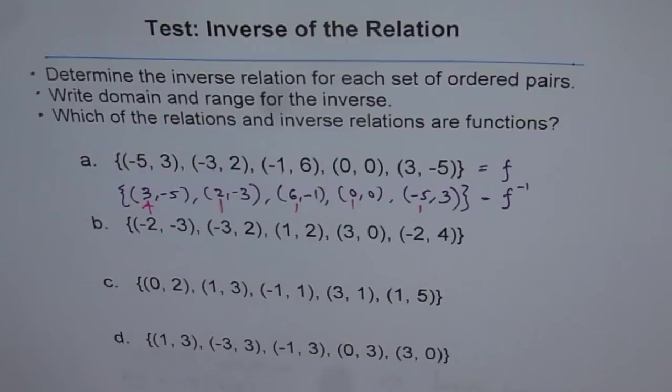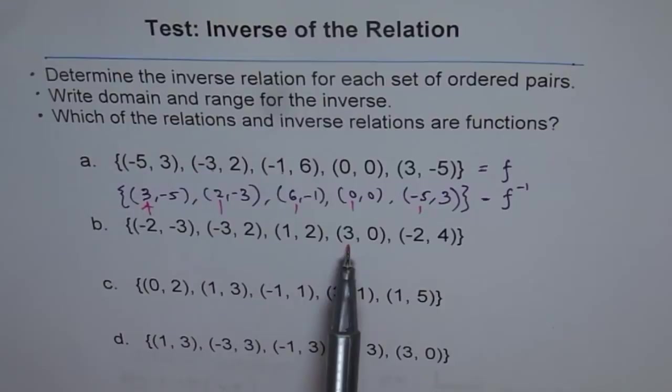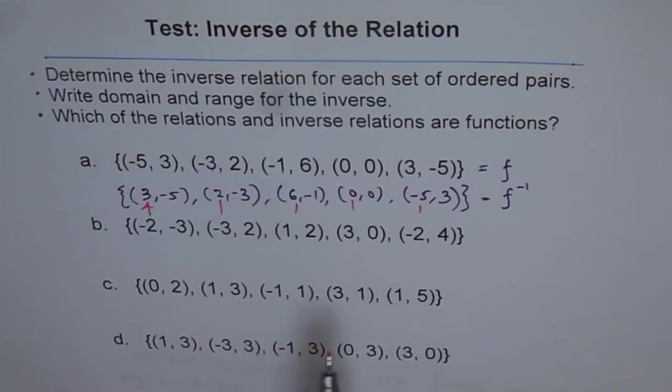Now, as you remember, to test for function or inverse to be a function, we have vertical line test and horizontal line test. So whether the given ordered pair is a function or not, just check the x values. If the x values repeat, then it is not a function.